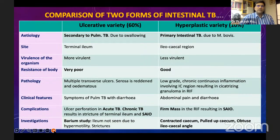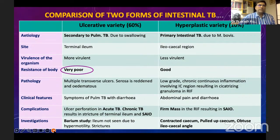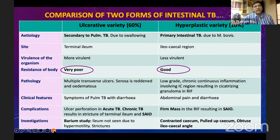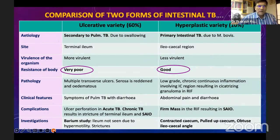Comparison of the two forms of intestinal tuberculosis: the ulcerative variety is found in approximately 60% of cases, seen in patients with poor resistance. The hyperplastic or ulcero-proliferative type, representing about 10% of patients, is often confused with malignancy, especially when caused by ingestion of Mycobacterium bovis from unpasteurized milk — a fibrotic or hypertrophic form that mimics malignancy very closely.